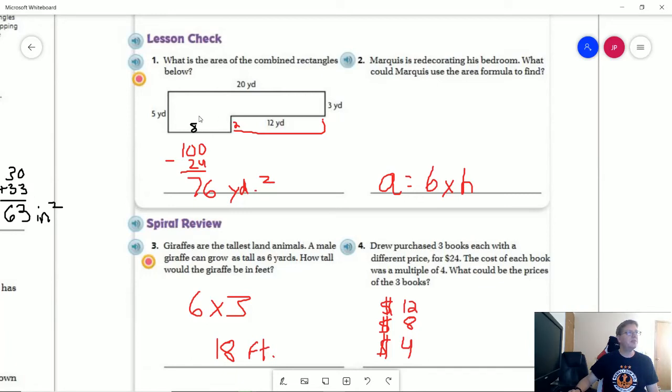And then you could also go ahead and go this way in which case you are doing 8 times 2 plus 20 times 3. And so 60 plus 16 would also give us 76 square yards.